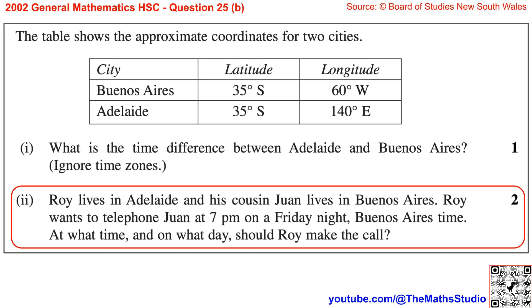Part 2. Roy lives in Adelaide, and his cousin Juan lives in Buenos Aires. Roy wants to telephone Juan at 7pm on a Friday night, Buenos Aires time. At what time and on what day should Roy make the call?